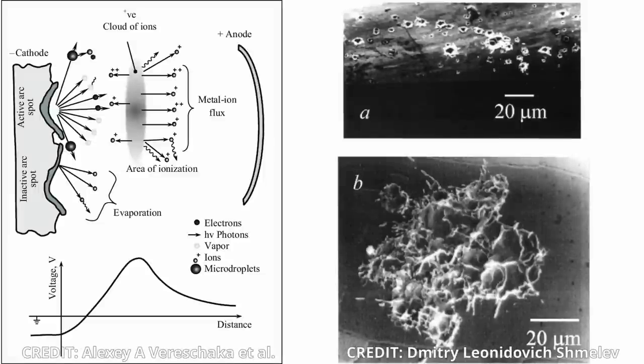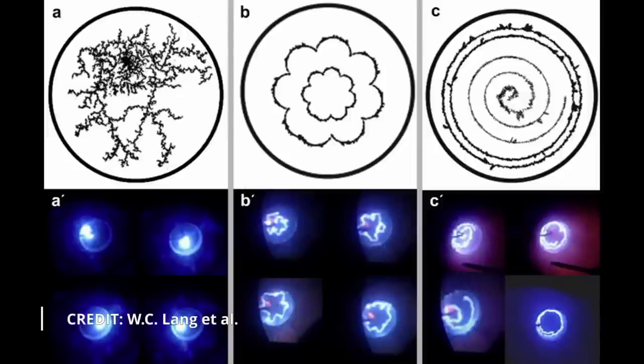What are cathode spots, how are they formed, what are their properties, and why do they seem to have self-similar patterns in the emitted light and arc erosion traces?